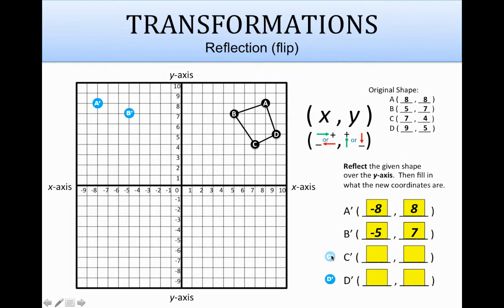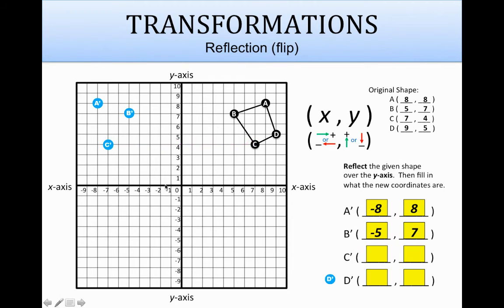Let's grab c prime and bring it up to where c is. Remember, you're going to be clicking and dragging — my video animations are a bit limited, so that's what I'm working with. Grab c prime and start on c. It's 7 units away on that side, so it's going to be 7 units away on the other side. Coordinates for c prime are negative 7, and then up 4 — so negative 7, 4.